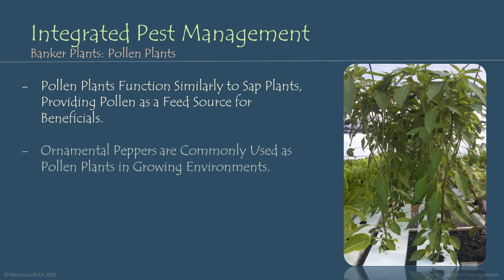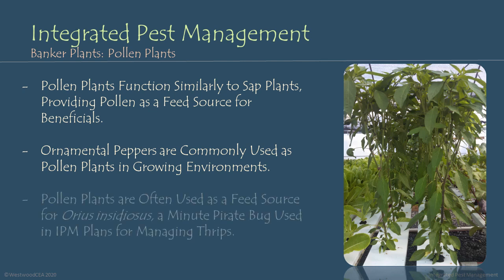Often ornamental peppers are commonly used as pollen plants in growing environments. Pollen plants are often used as a feed source for Orius beetles, or pirate beetles, that are used in integrated pest management plans for managing thrips populations.